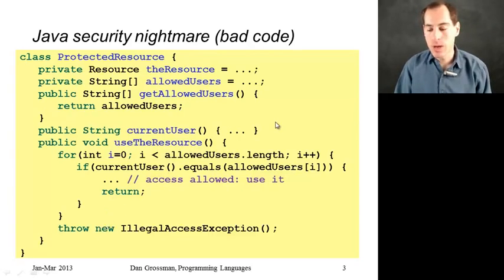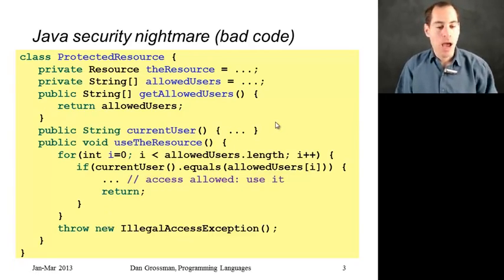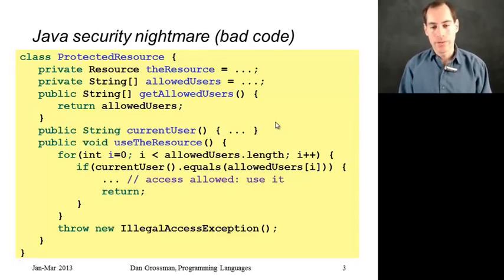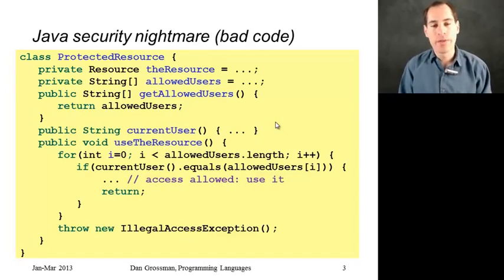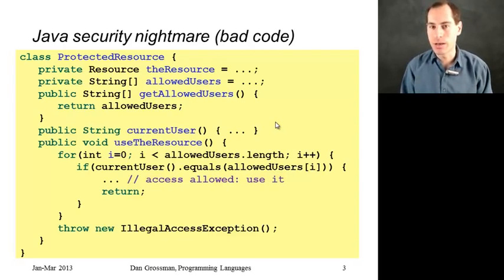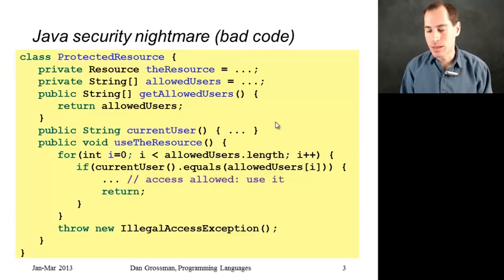This code probably makes sense to you. I encourage you to figure out how it's in fact insecure, and how it would let any user who's just a little bit clever to actually use the resource whether they're supposed to or not. I'm going to tell you the answer in a few seconds - click pause if you want. And don't be too tough on yourself if you can't find the bug, since a lot of other people, including the people who have written code like this, have made the same mistake.